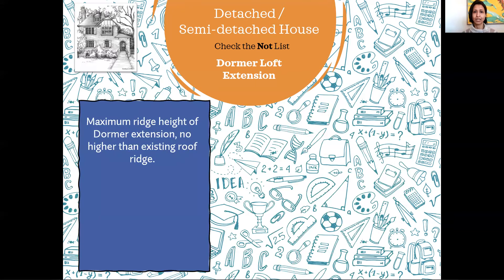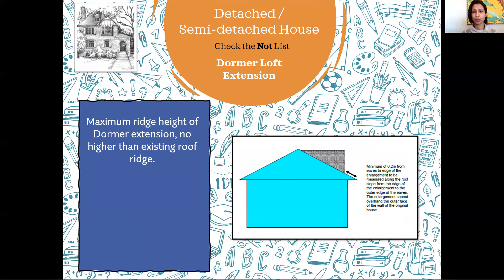The maximum ridge height of your dormer extension should be no higher than the existing roof ridge of your house. The ridge is the highest point of a sloping roof. Looking at the sketch here: the blue box is your existing house, the tip is the highest point — the ridge — and the gray area is the dormer you want to add. The ridge of your extension should be lower than the ridge of your existing house.